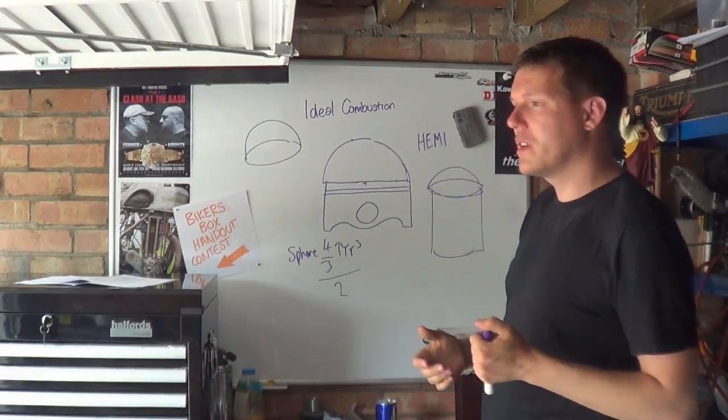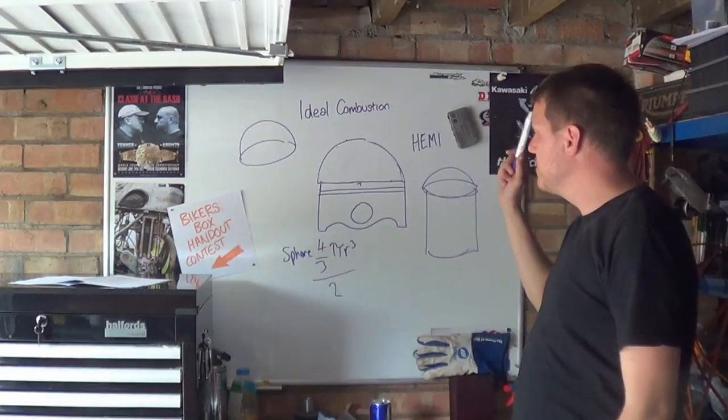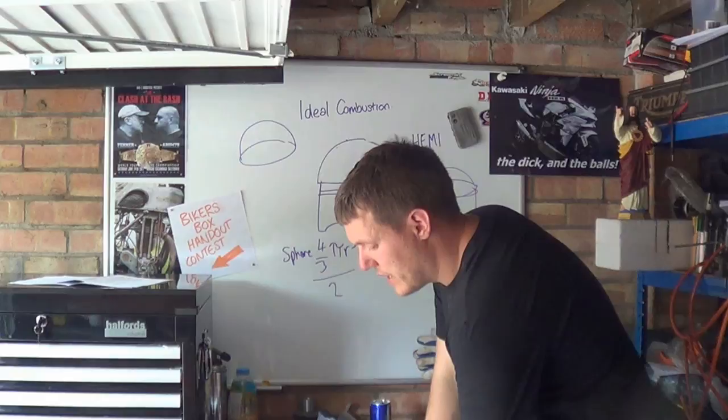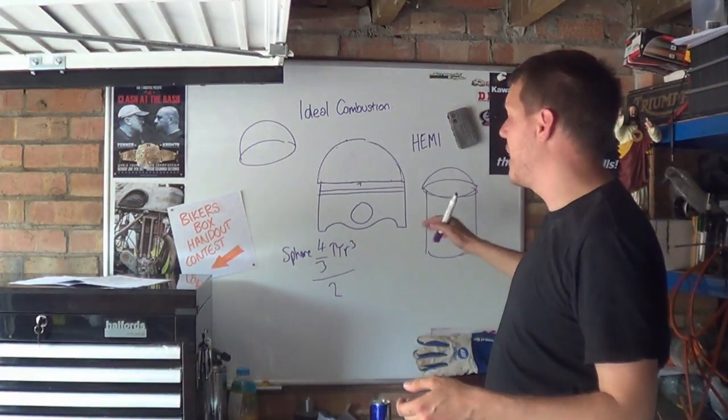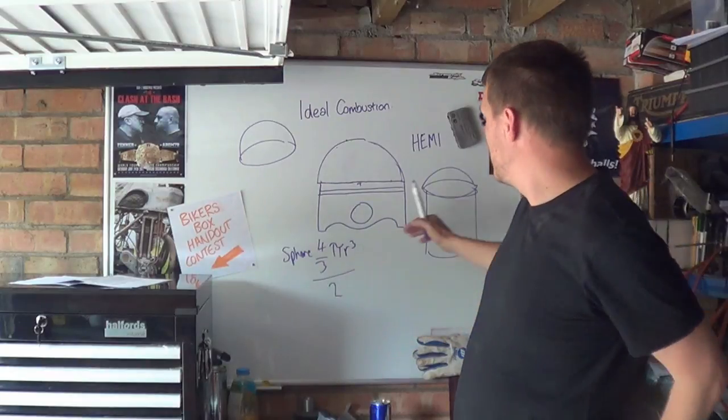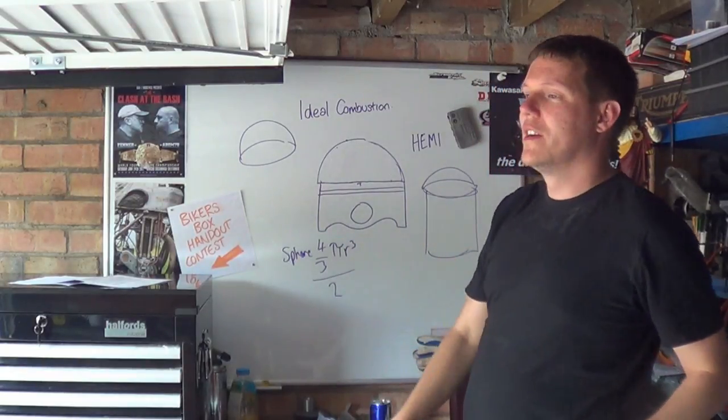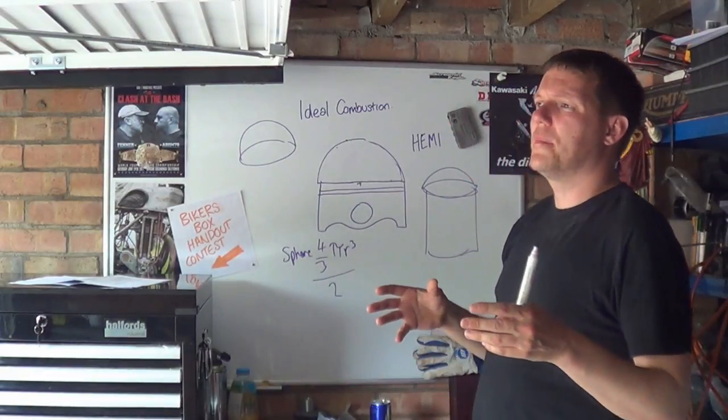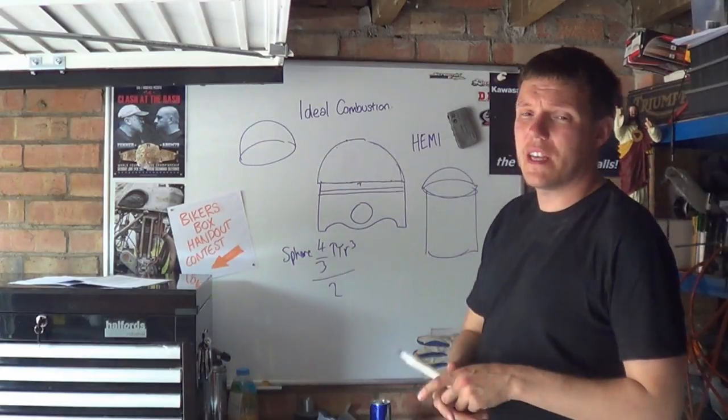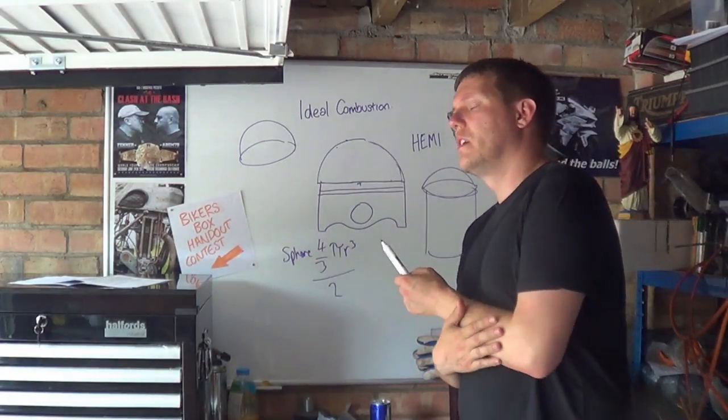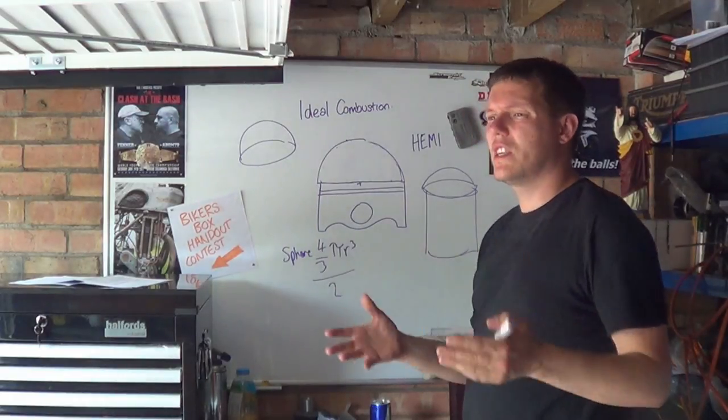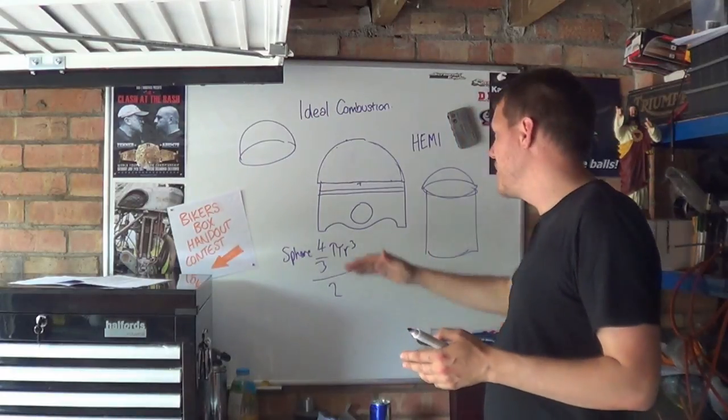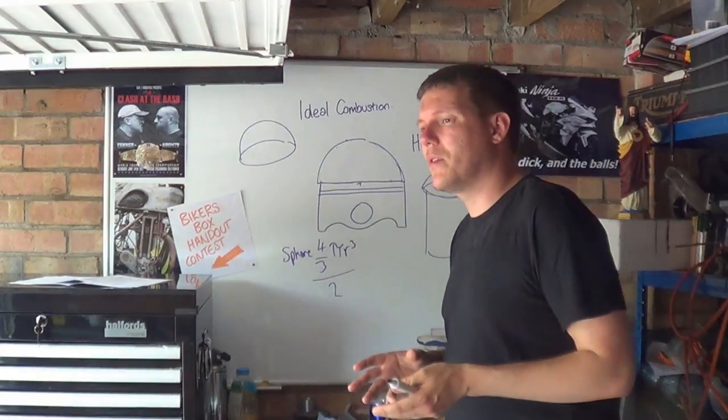The volume of a sphere is four-thirds pi r cubed, and then you just have to basically divide this all by two because it's a hemisphere. When you work all of this out, the relationship between your cylinder and your hemisphere - you get to basically what we call a theoretical limit. If you've got the sphere, you get this theoretical limit. There's this theoretical limit on how much of a compression ratio you can have.